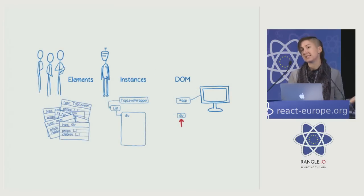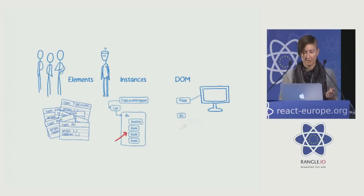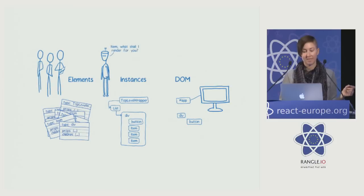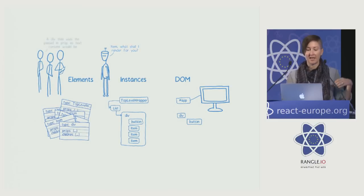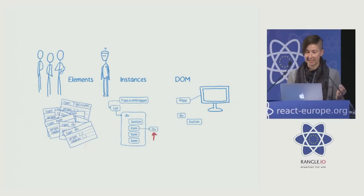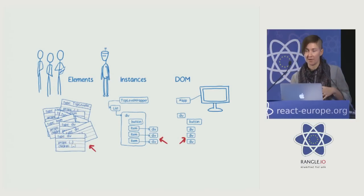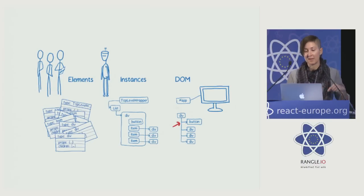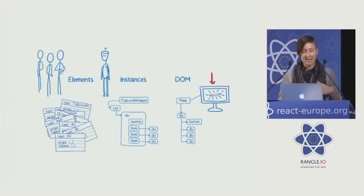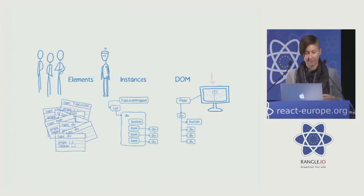React takes this flattened list and creates instances for all these things, then makes DOM nodes. Button is easy — it's internally defined, so React knows how to build the DOM for it. For the first item it has to ask the component, which says to create a div and use the passed-in prop as text content. React creates the div, the instance, and since it knows what a div is, goes over to the DOM and creates it. It does this for all items. Then it connects those children up to their parent wrapping div, and connects that wrapping div up to the app container — and this is what schedules the reflow. This is the batching — React reduces work for the main thread by scheduling it all together. And we get our UI. That's the initial render.